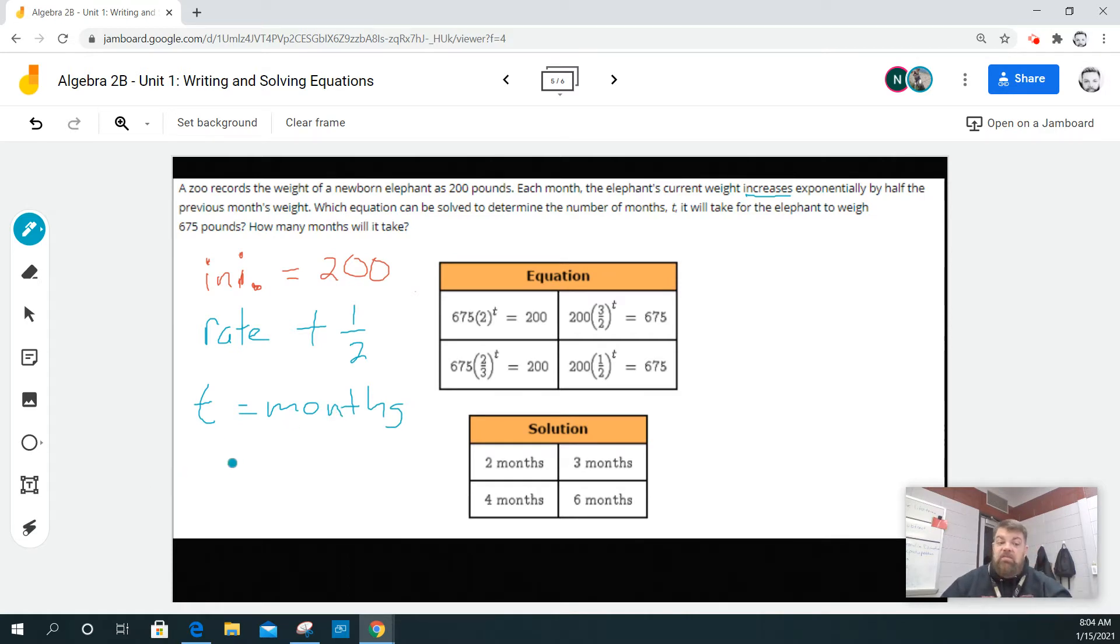And then the final weight is equal to 675. So the general form is initial, the initial value times one plus the rate raised to the time, and that has to equal the final.